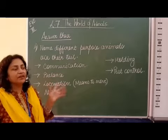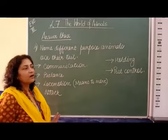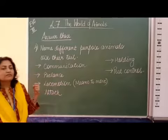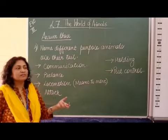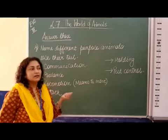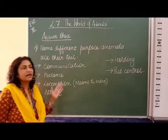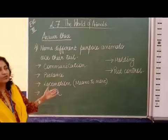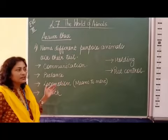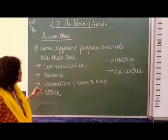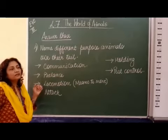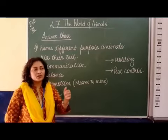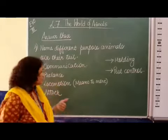For example, when a dog is very happy, it wags its tail up; when the dog is afraid, it puts its tail down. That means it communicates a message — it shows its emotion. Balance: already we have gone through the other chapter about the pangolin and squirrel. Their tail helps them to balance. It helps them move from one place to another, keeping balance. Next, locomotion means to move. If we talk about fish, the tail helps the fish to move from one direction to another and change direction. That is called locomotion.